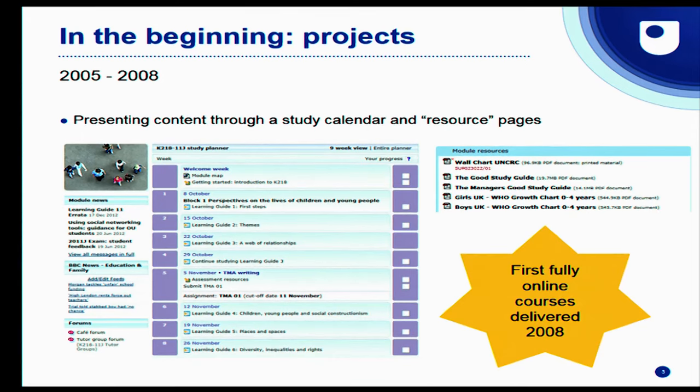But right now, let's pop into the DeLorean and head back in time to the very beginning. Back at the start of our days with Moodle, it was all about a direct replacement for print. We had a study calendar and our first Moodle module, which was called Resource Pages, and this allowed us to hang PDF files and Word documents — versions of printed course materials. And in this way, we presented our first fully online courses in 2008.